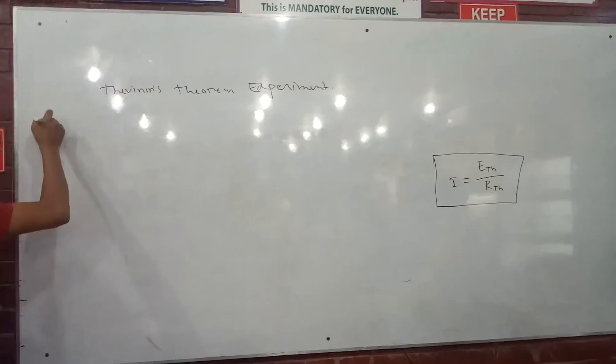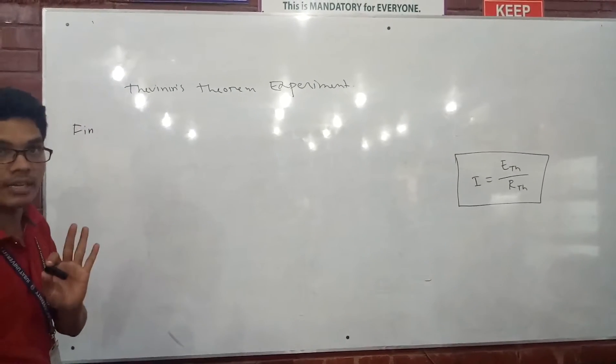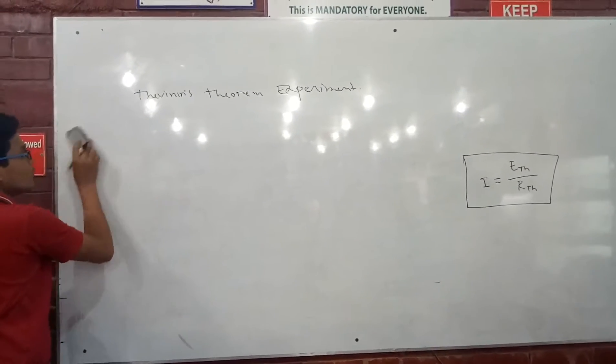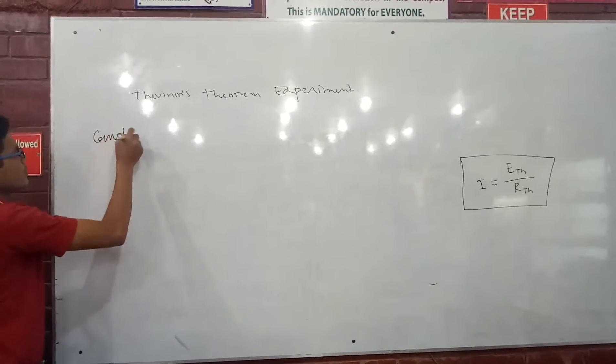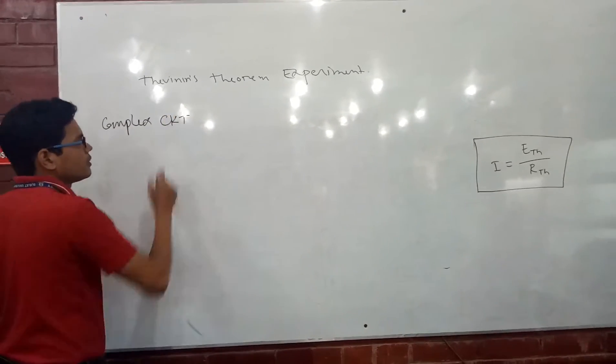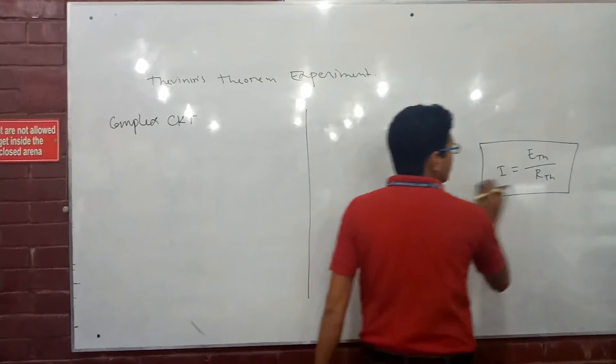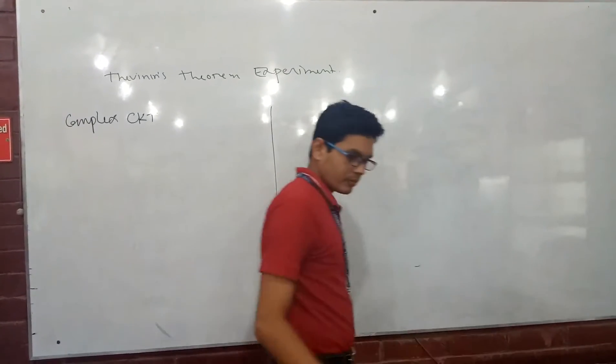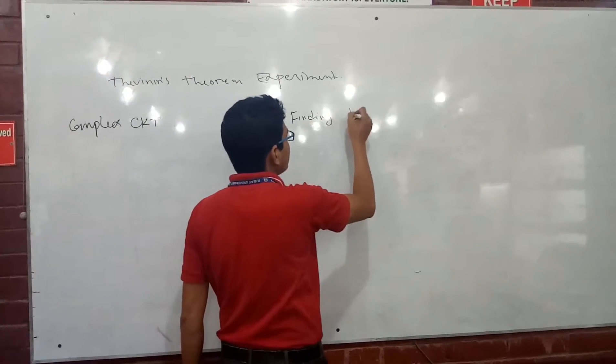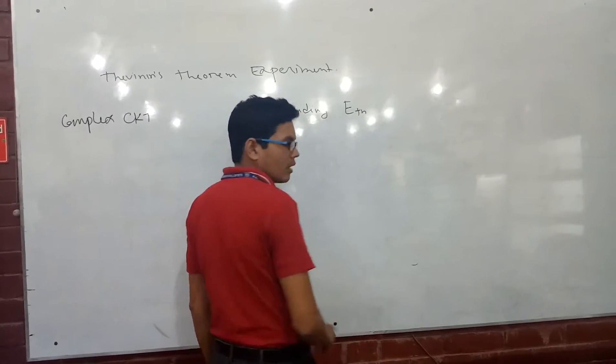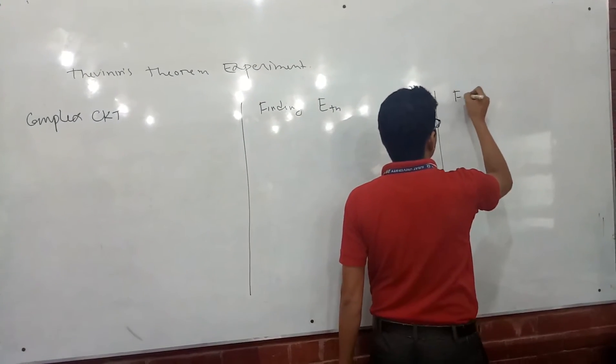Let me give you an idea of how to find them. First, we have a complex circuit. Next, from that complex circuit, we find Thevenin's equivalent potential. Next to that is finding...